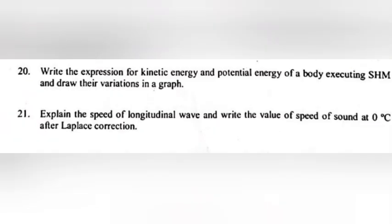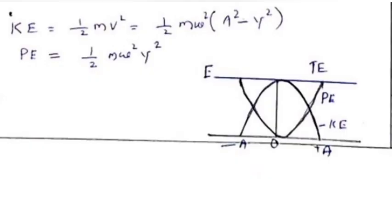Question 20: Write the expression for kinetic energy and potential energy for a body executing SHM and their variations in a graph. Answer: Write the equation and draw the diagram.